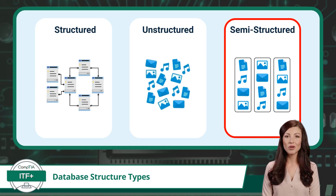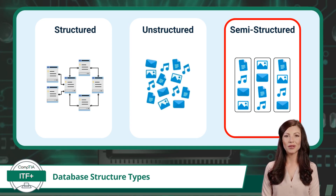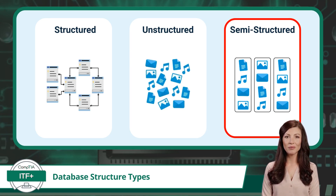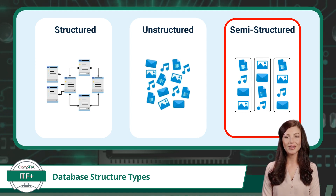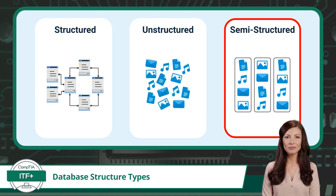Semi-structured data is data that doesn't adhere to organized tables, but is not completely unstructured either. This includes data such as text, images, videos, and audio that is accompanied with various meta tags. Meta tags categorize or label data elements and can be used to indicate the data's purpose, source, or any other relevant information. These meta tags help in organizing and querying semi-structured data efficiently.